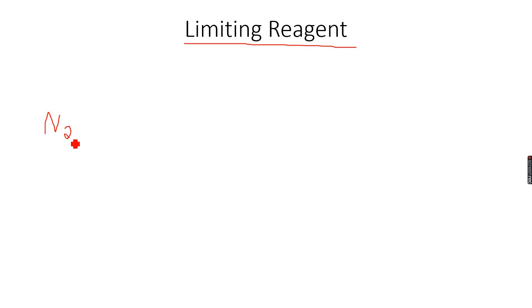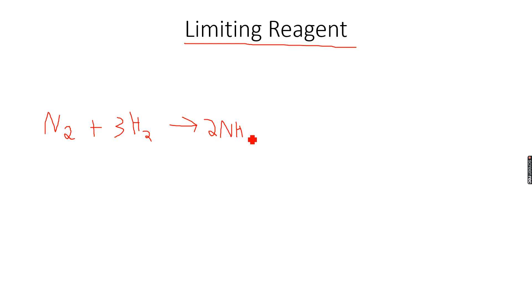Let's take the same example of the Haber process: N2 + 3H2 → 2NH3. Now I have 0.5 moles of nitrogen but 5 moles of hydrogen available to react.